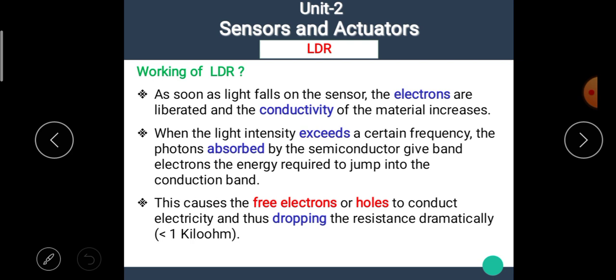As soon as light falls on the sensor, the electrons are liberated and the conductivity of the material increases. When the light intensity exceeds a certain frequency, then the photons absorbed by the semiconductor give band electrons the energy required to jump into the conduction band. That means when the light incident on the photo sensitive material, then the electrons are separated and distributed and the conductivity of the material increases. How this happen?